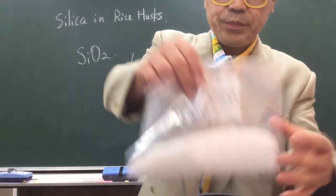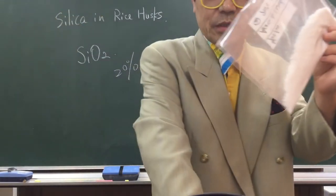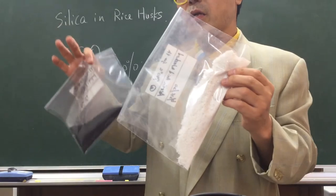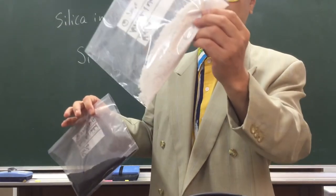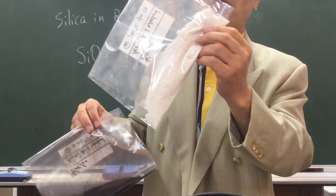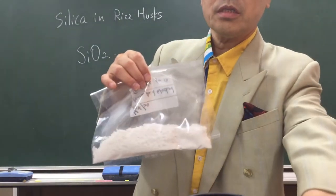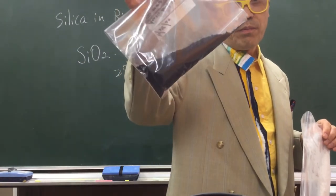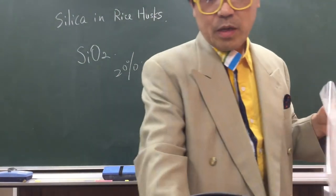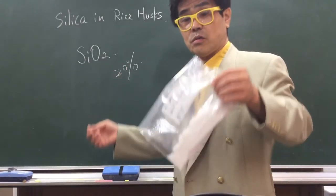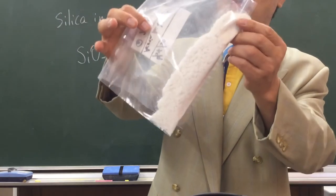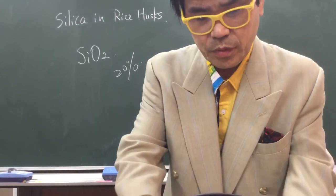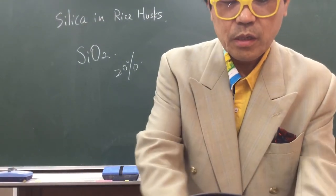What we do is incinerate rice husk under controlled conditions, and we get this — not black, but very white ash. See? Very white, no black. If you control the burning and incineration system, you get very pure white ash. Without control: silica plus carbon. Under control: almost 100% pure silica.